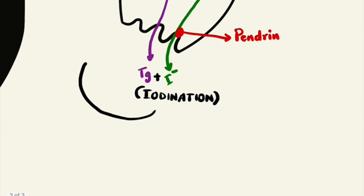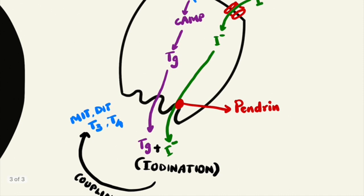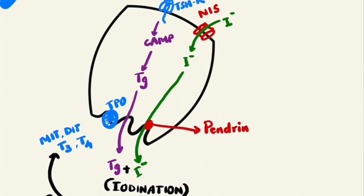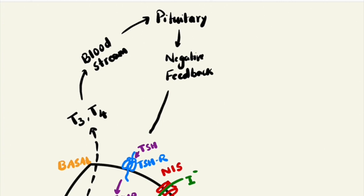There is a process called coupling where two monoiodotyrosine molecules may combine to form diiodotyrosine. When one monoiodotyrosine and one diiodotyrosine combine, it forms triiodothyronine — T3 — and you can also get T4. This coupling is done with the help of thyroid peroxidase enzyme, which is present on the apical side. Whenever there is an abnormality of thyroid peroxidase, you can have hypothyroidism because of a defect in the coupling process. The thyroid hormones are then absorbed via the follicular cell and released into the blood, acting on the pituitary gland resulting in negative feedback and suppression of TSH production.